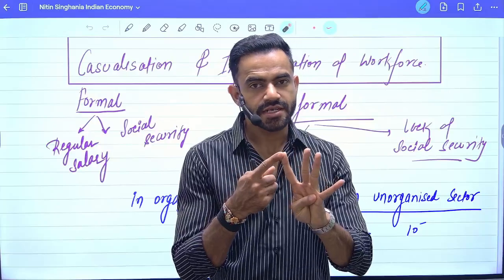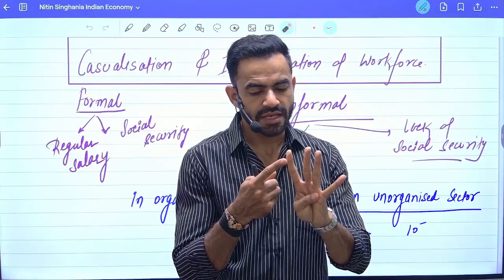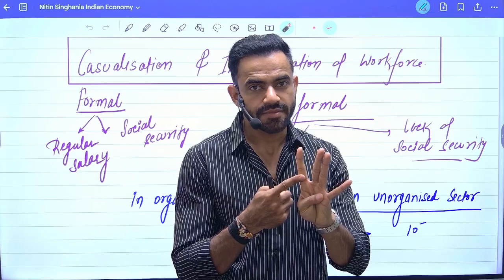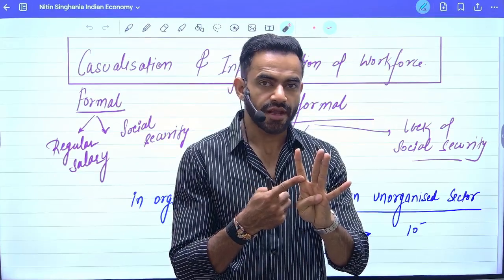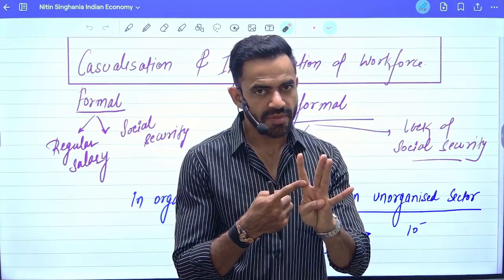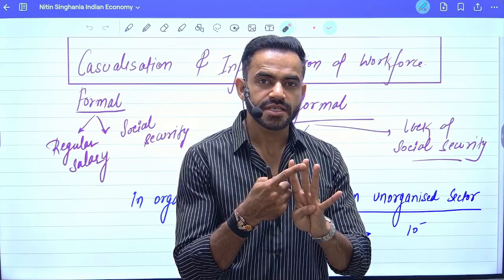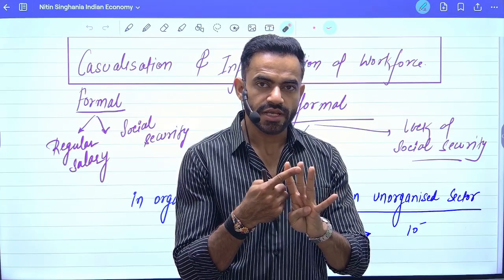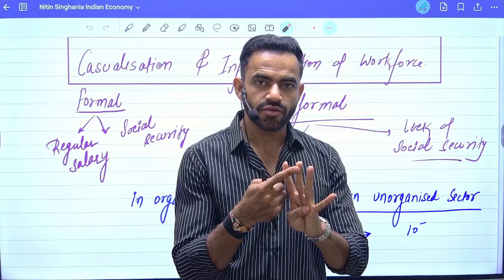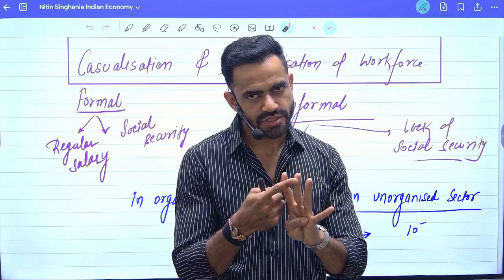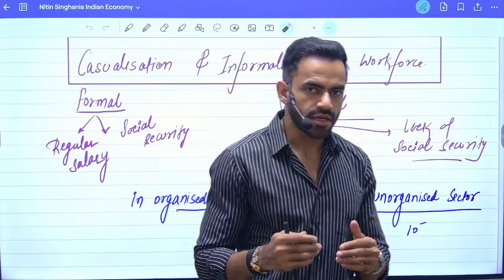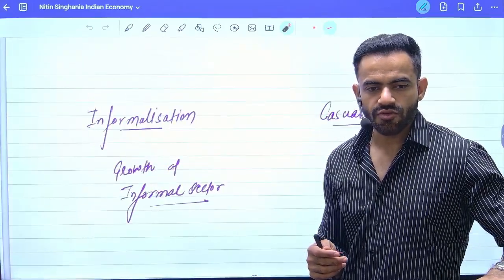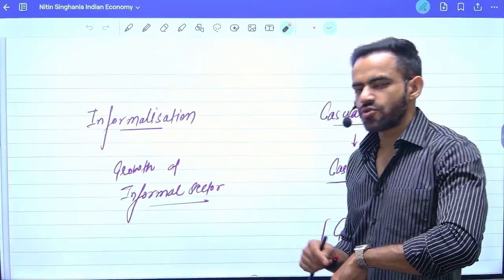So four things are there: organized sector means more than 10 employees; unorganized sector means less than 10 employees; formal sector means regular salary plus social security benefits; informal sector means you are a casual worker without social security benefits. These are the four basic terms. Now let's understand the meaning of casualization and informalization of the workforce.